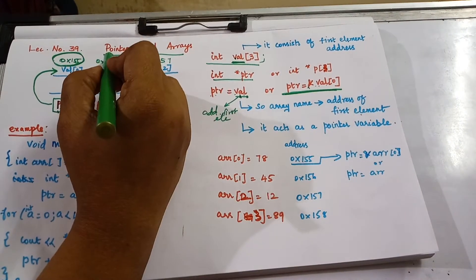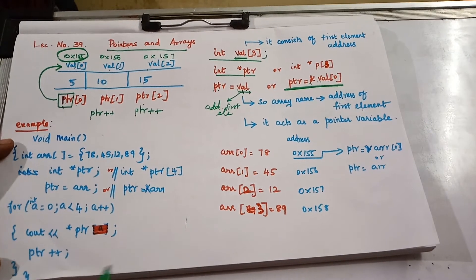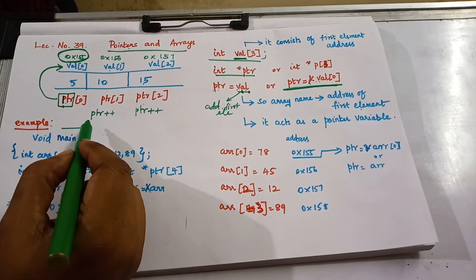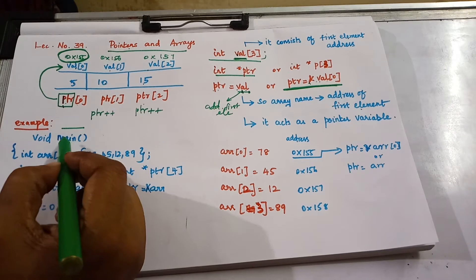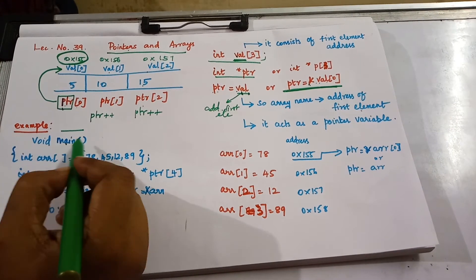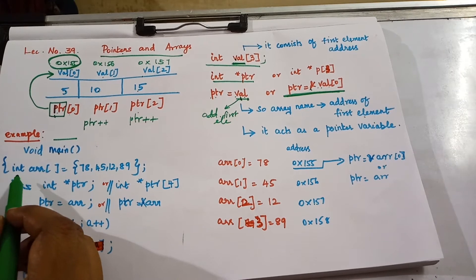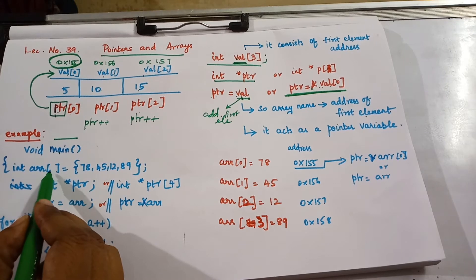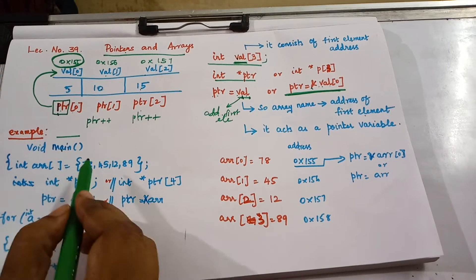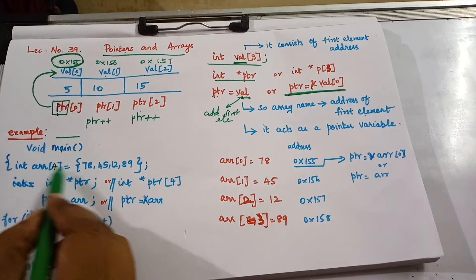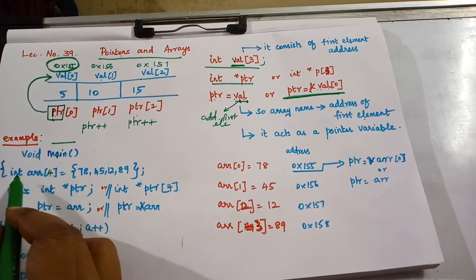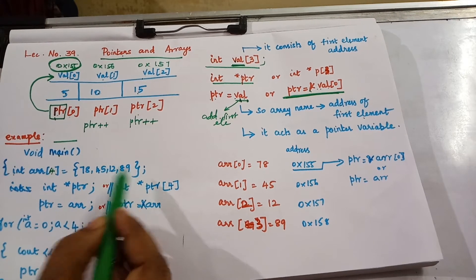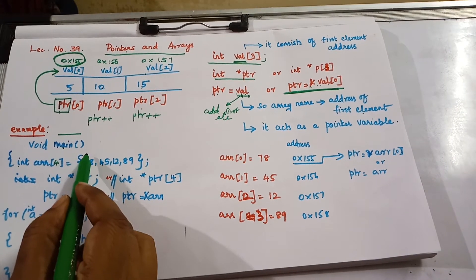Now let's look at the simple program. You have to use preprocessor directives: '#include iostream', 'using namespace std', then start your main program with 'void main'. I am declaring the array: 'int array[4] = {78, 45, 12, 89}'. The size of the array is 4, with positions 0 to 3.